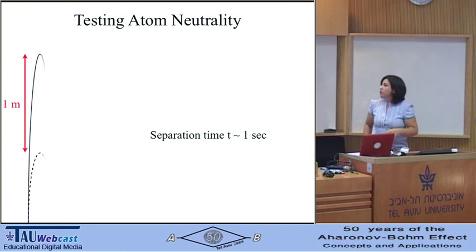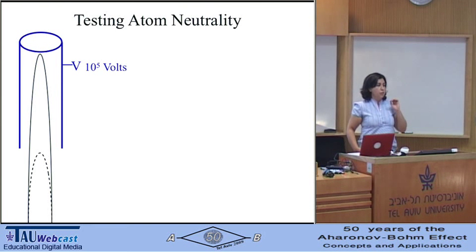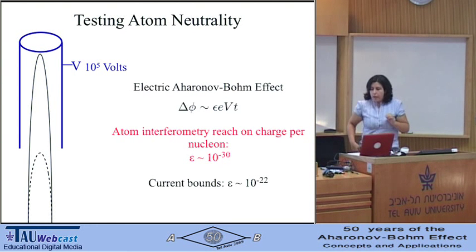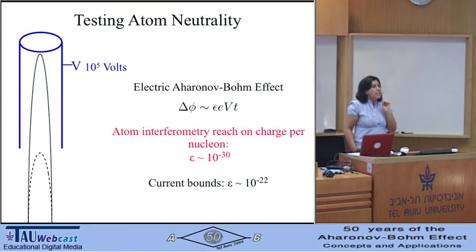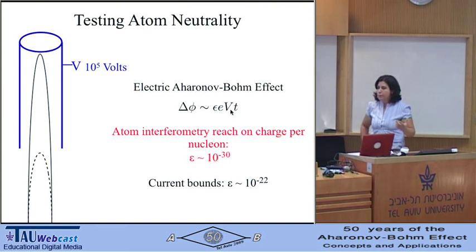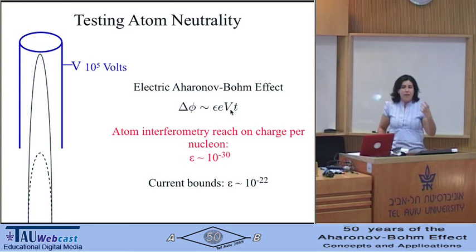I take advantage of this macroscopic separation and introduce a voltage in the trajectory of the first component of the atoms. The electric Aharonov-Bohm effect tells me that if the atom has a tiny charge epsilon compared to the electron, there will be a phase shift proportional to the atom's charge times the voltage applied times the time for which it was applied. Given the sensitivity of the experiment, we will be sensitive to a charge per nucleon at the level of one part in 10^30 compared to the charge of the electron. Current bounds are eight orders of magnitude above.